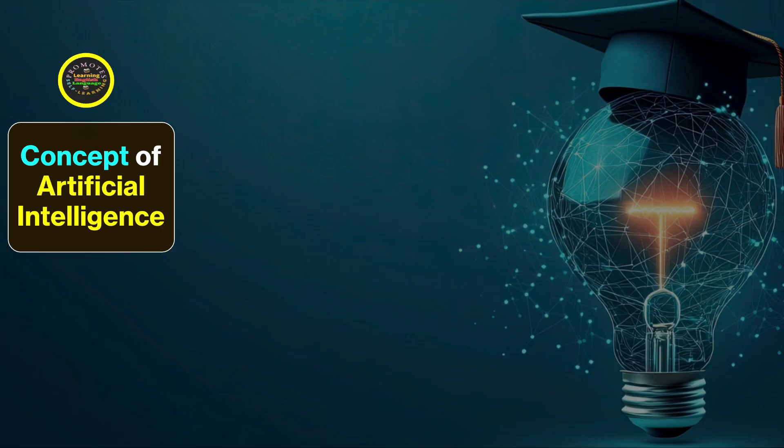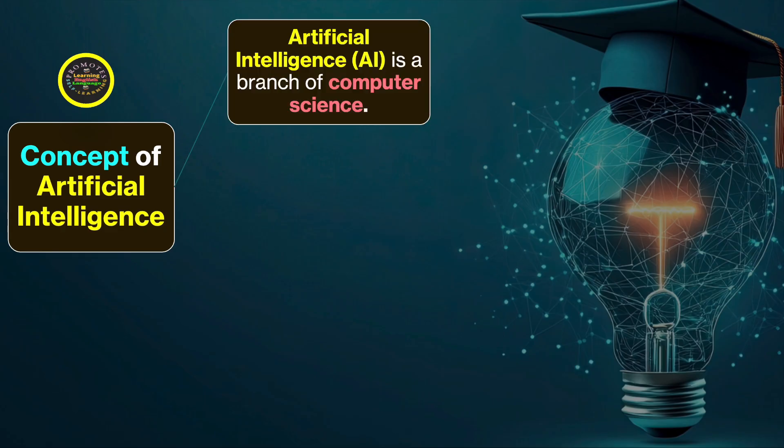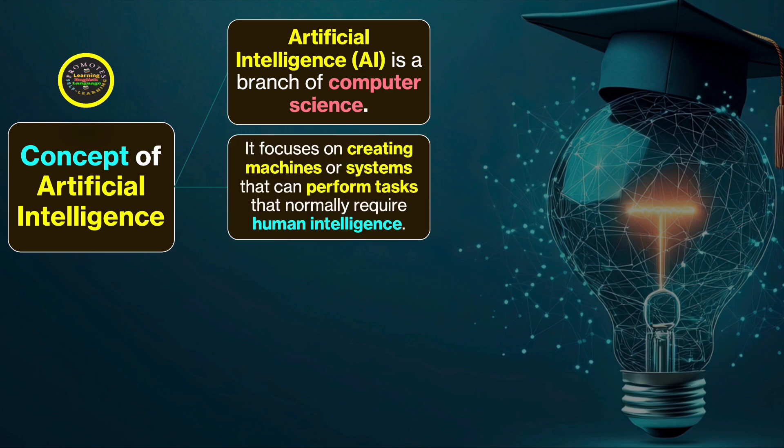Now let's talk about the core idea revolving around artificial intelligence. Artificial intelligence, also known in brief as AI, is a branch of computer science. It focuses on creating machines or systems that can perform tasks that normally require human intelligence.